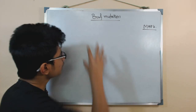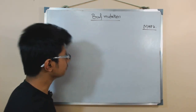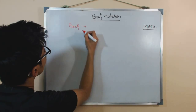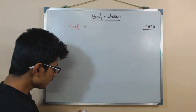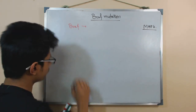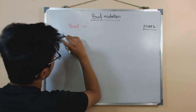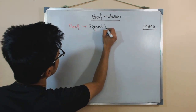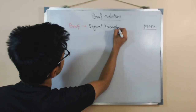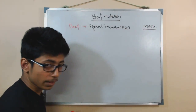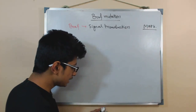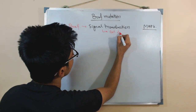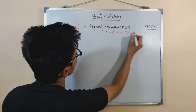For understanding BRAF mutation, you need to know what BRAF is. BRAF is a gene, as usual, and it produces a protein called BRAF. This BRAF protein is a signal transduction protein inside the cell, and it is related with the signal transduction of cell division and growth.